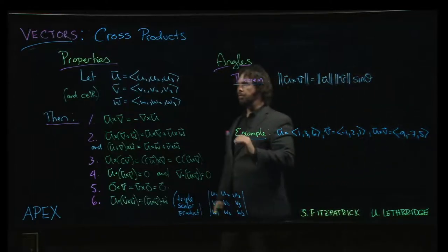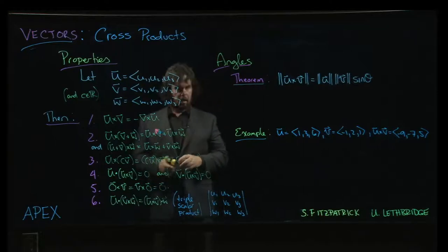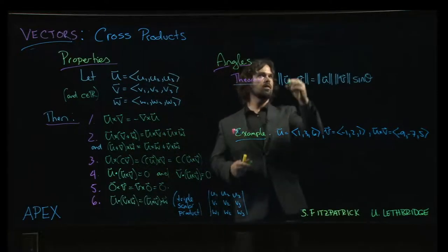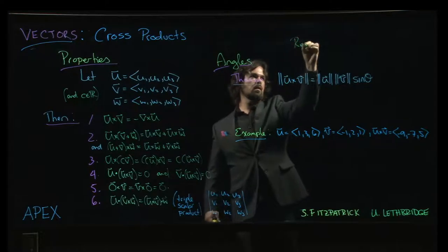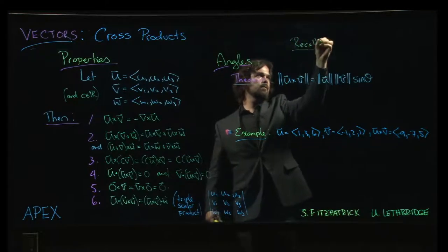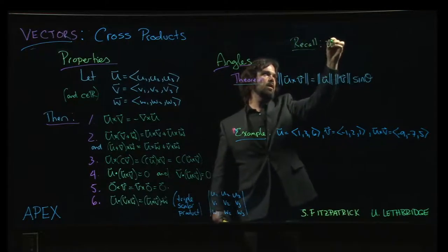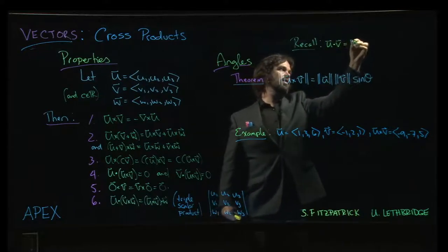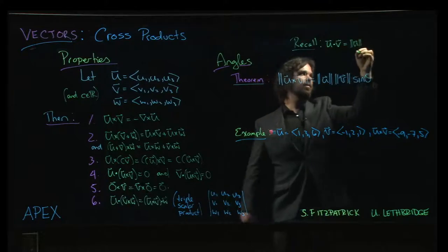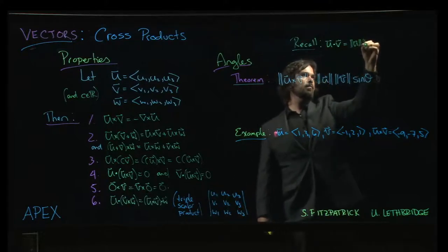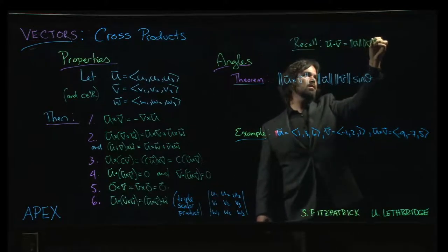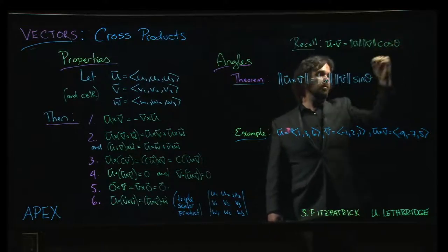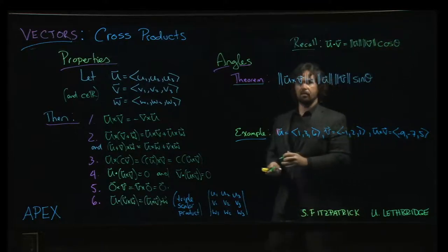Next we're going to look at how the cross product relates to angles. So you might recall, let's throw this up as a reminder here, that the dot product satisfies the following formula: magnitude of u times the magnitude of v times cosine of the angle between them.